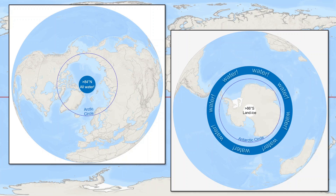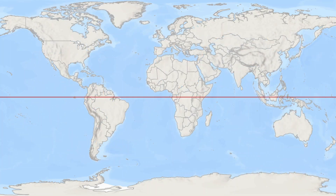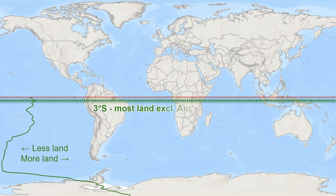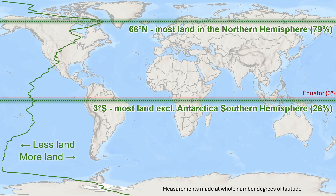Outside of Antarctica, the southern hemisphere latitude proportionally spanning the most land is 3 degrees south, capturing a fairly wide transect of South America and southern hemisphere Africa, as well as some of the larger islands of Southeast Asia. And for the more continent-heavy northern hemisphere, the most land-spanning parallel is close to the Arctic Circle at 66 degrees, crossing wide swaths of both North America and Eurasia.